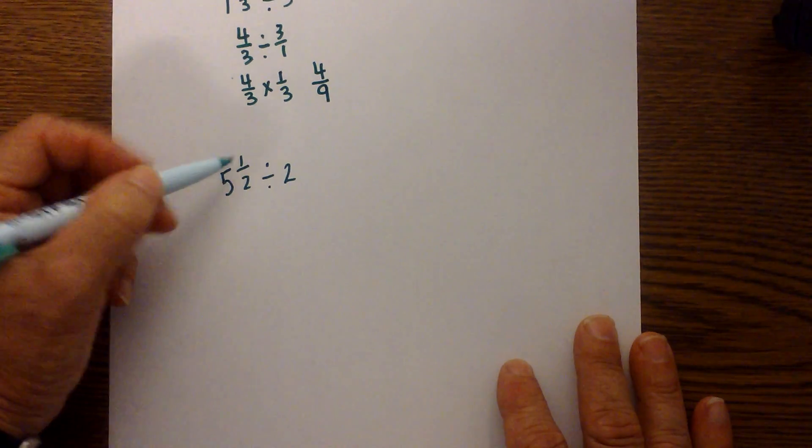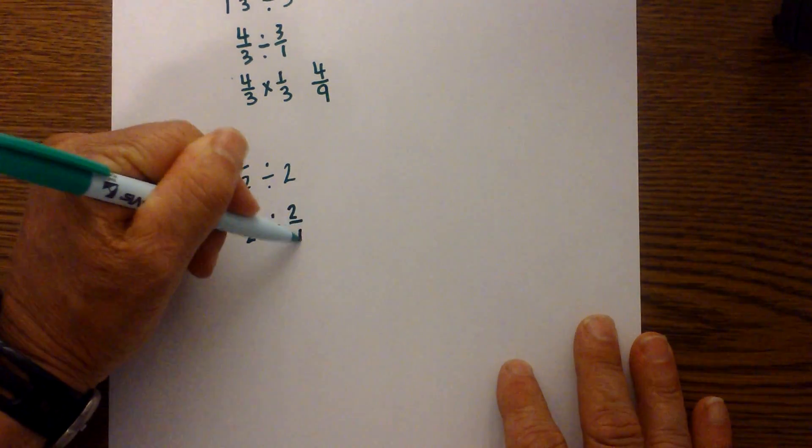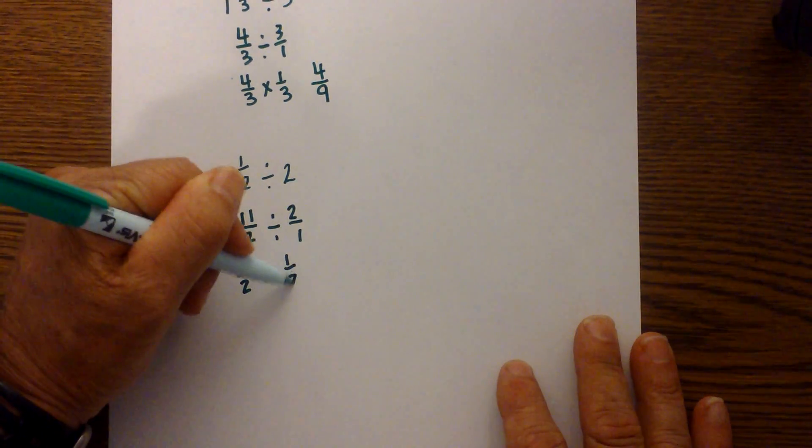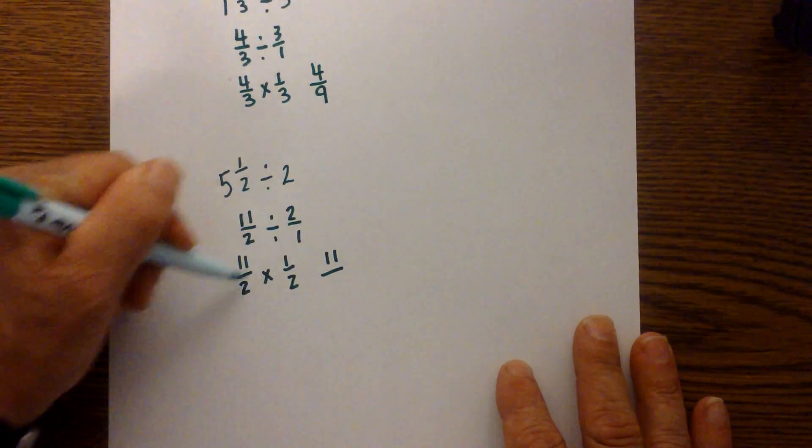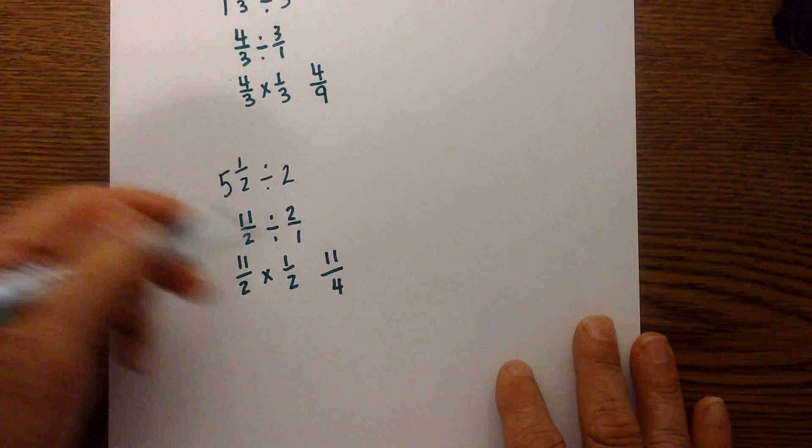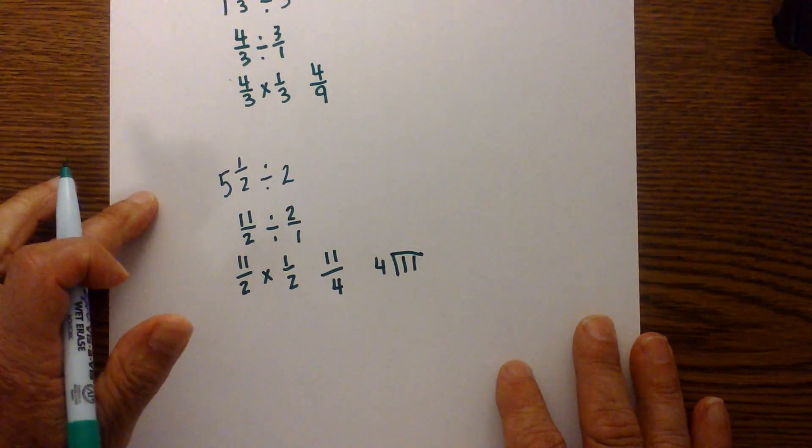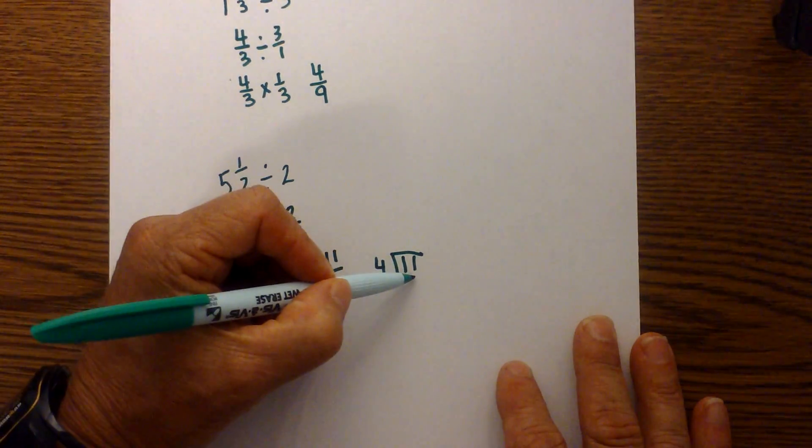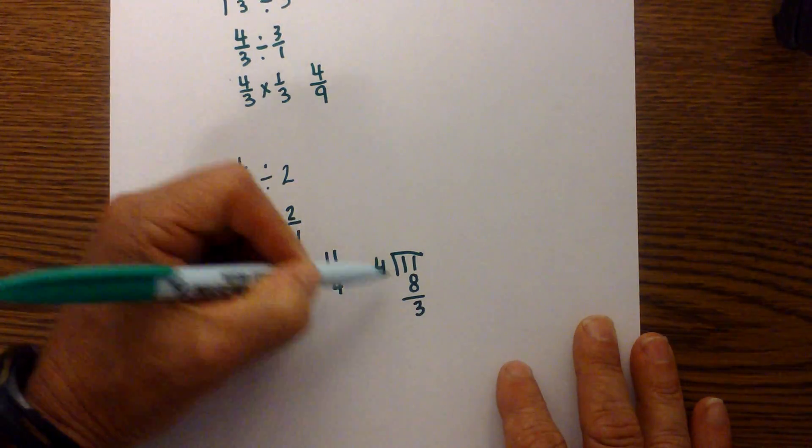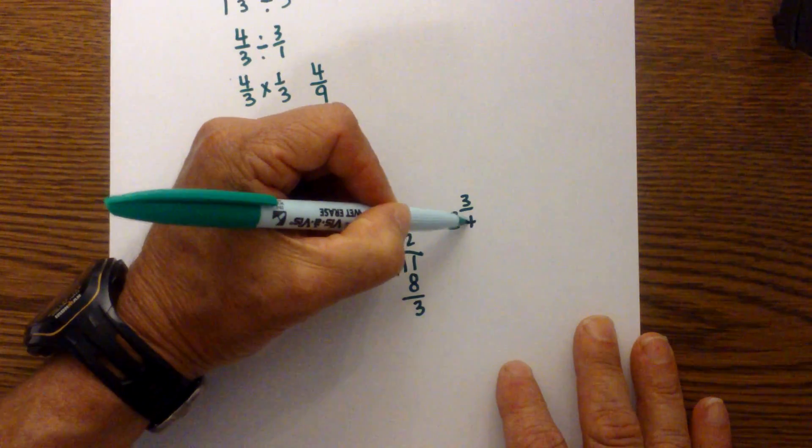2 times 5 is 10 plus 1. We have 11 halves divided by 2 over 1. Keep, change the sign, and flip. 11 times 1 is 11, 2 times 2 is 4. And we can then convert that into a mixed number. 4 goes into 11 two times which is 8. 11 minus 8 is 3. So, that becomes 2 and 3 fourths.